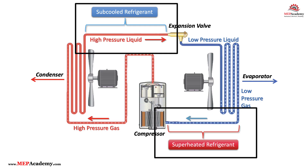So why are these so important? Too low superheat could mean liquid is getting to the compressor — bad news. Too high superheat means the system is undercharged, or the evaporator isn't getting enough refrigerant. This indicates refrigerant vaporized too early, reducing cooling capacity and efficiency.